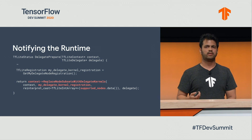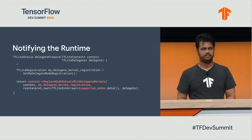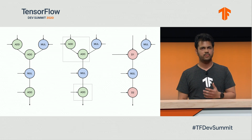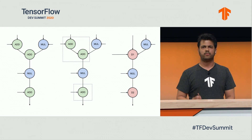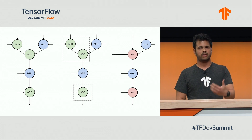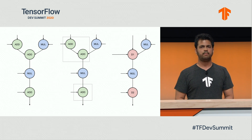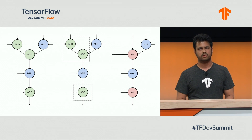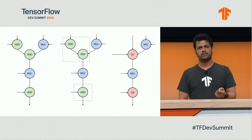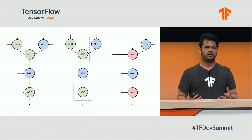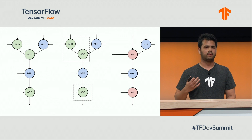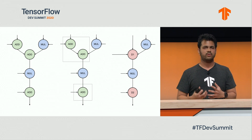Let's look at what the runtime does when the delegate calls this method. Here we have a simple example of a model with add and mul ops. And let's say our delegate only supports the add operation. So once the delegate calls this method with the nodes, the runtime partitions all the nodes into two subsets or two types of partitions: one is delegated, and the other is non-delegated. Many of the delegates optimize inference by fusing a lot of the ops together, so this way the delegate can maximize the fusings and fuse as many ops as possible.